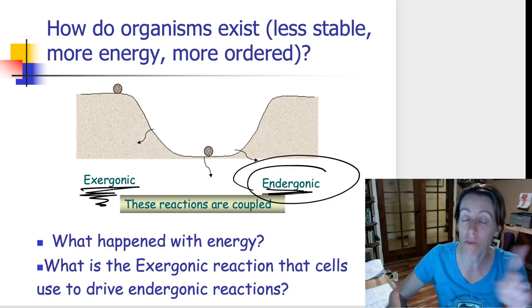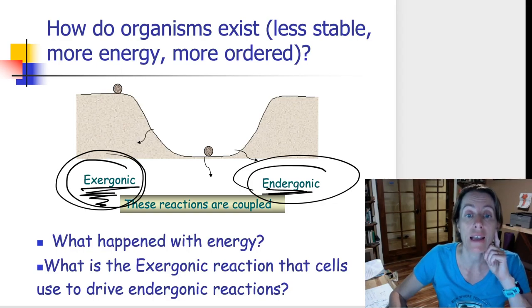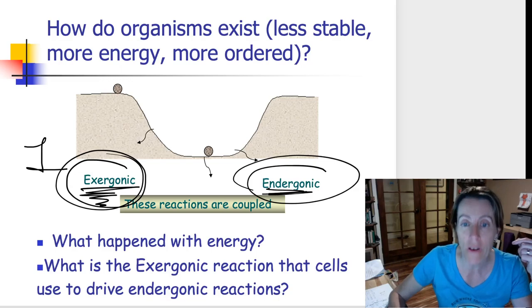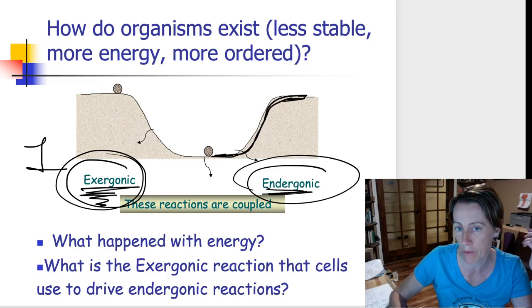And what's really cool in our bodies is that it's like there's one exergonic, a one-size-fits-all exergonic reaction that we use over and over and over again in our bodies to drive all the different endergonic reactions that we need to do. So this curve could be multiple things. There's many different reactants and products this could be on the right.